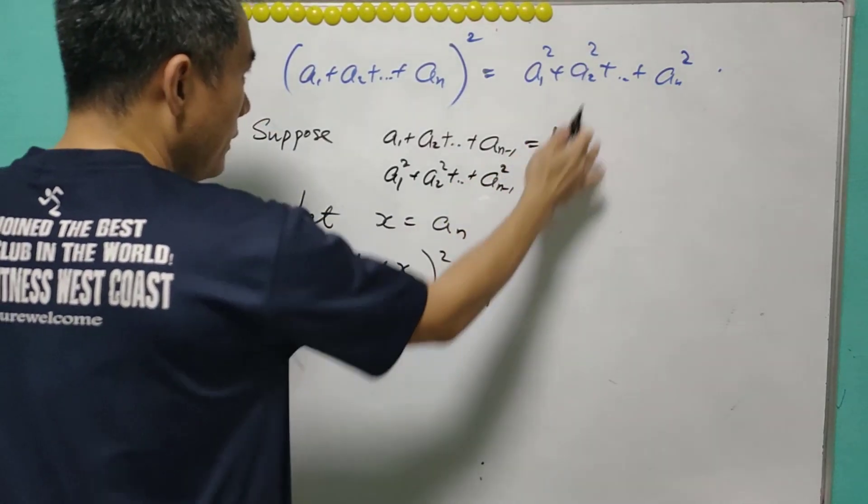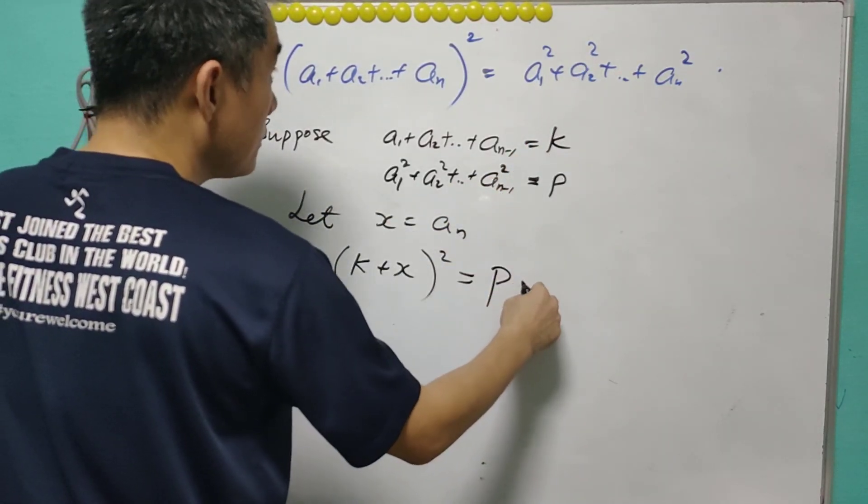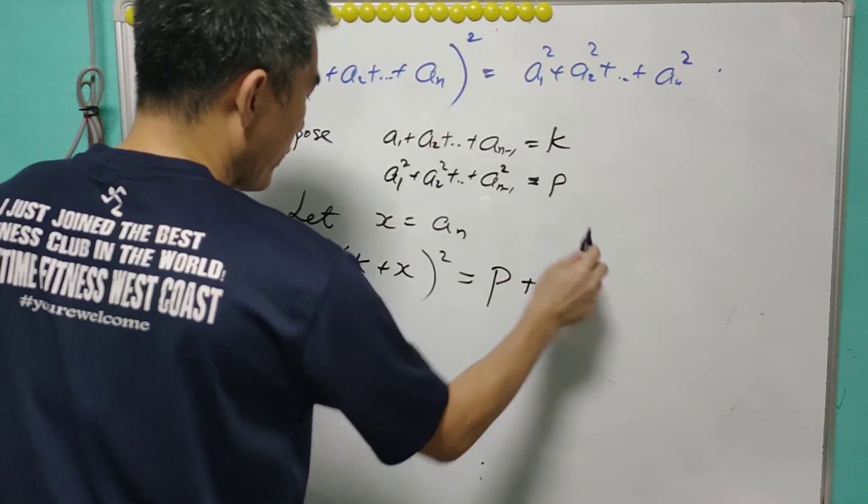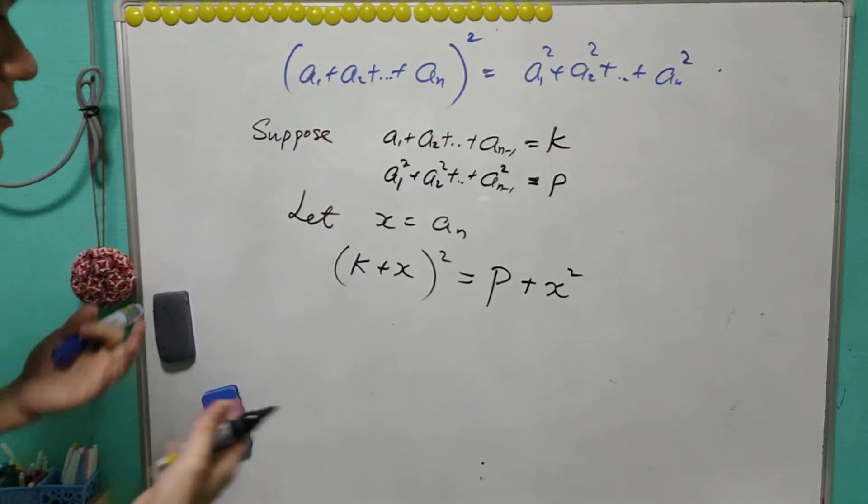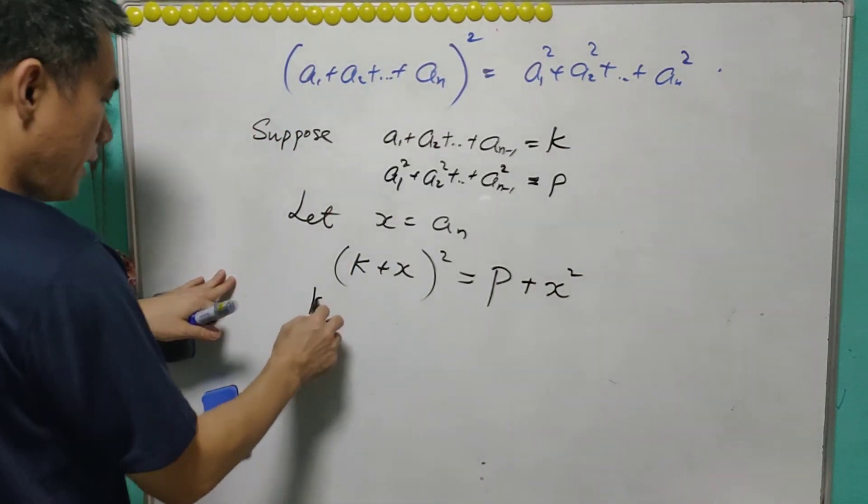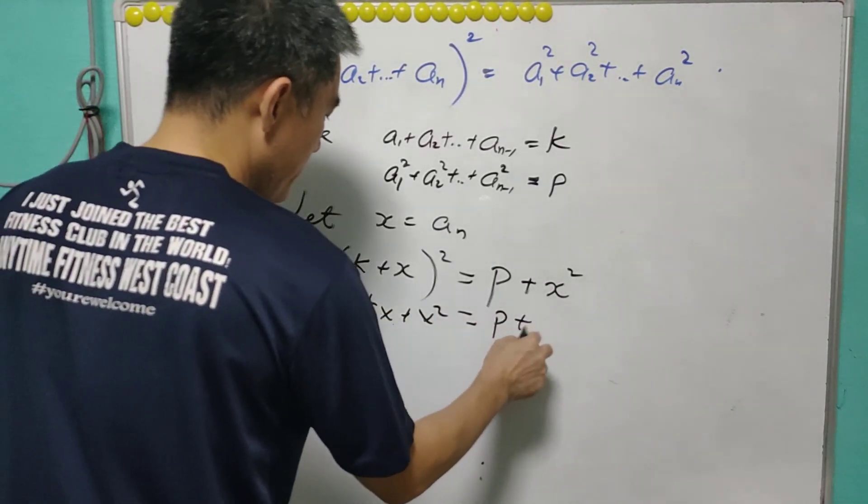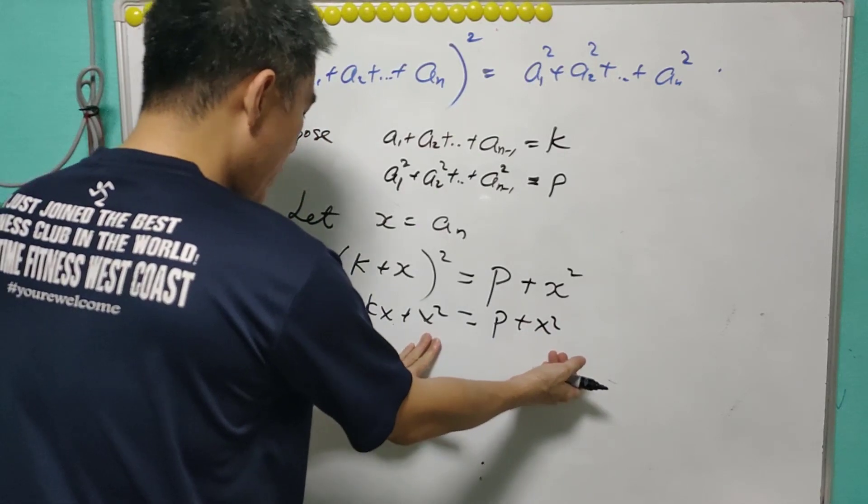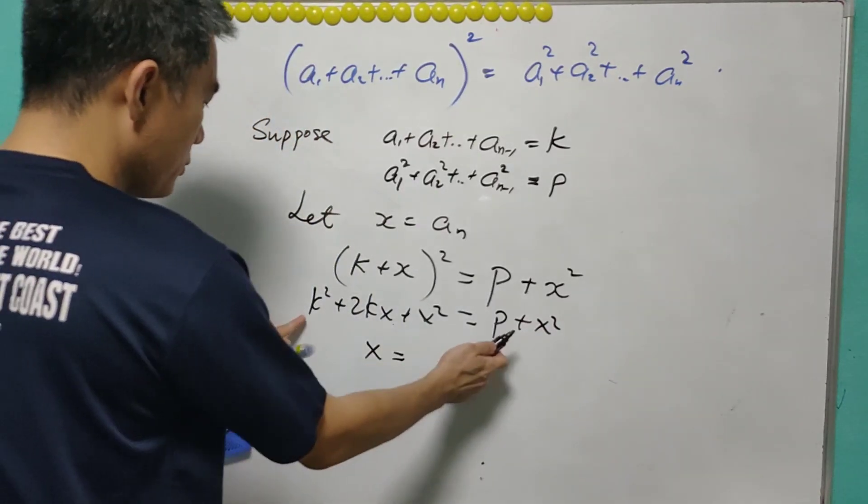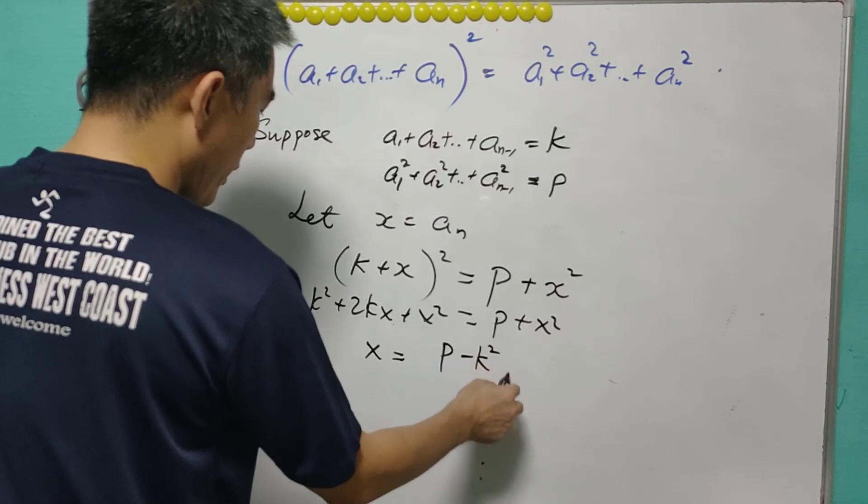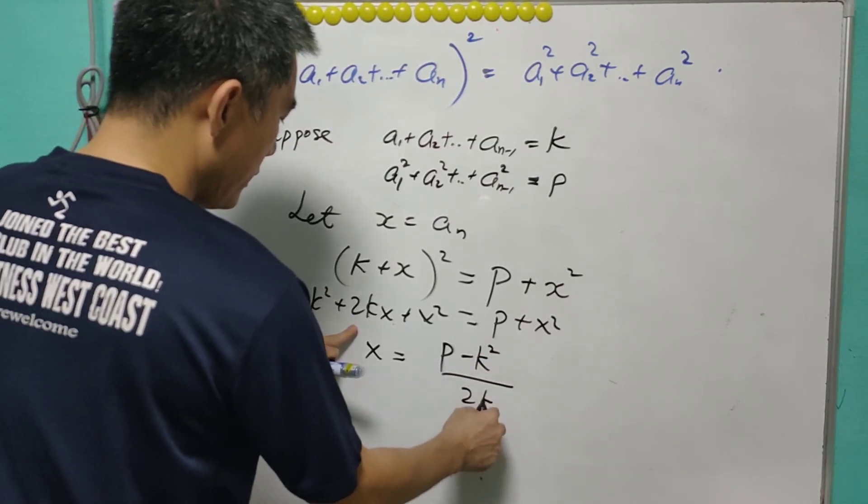And from the right hand side, it is equal to p plus x square. Now we are able to solve x easily. This is k square plus 2kx plus x square. And this is p plus x square. Cancel the x square. So x is actually equal to p minus k square over 2k.